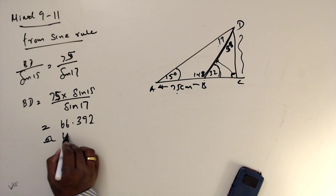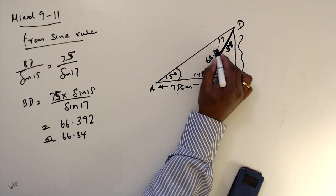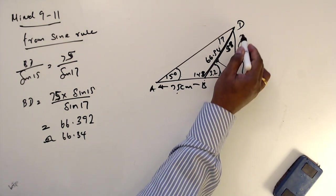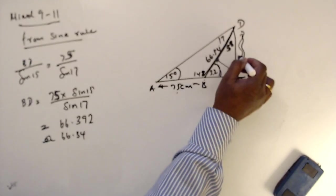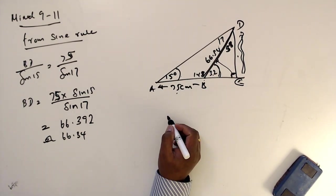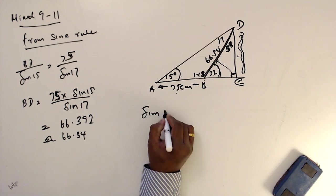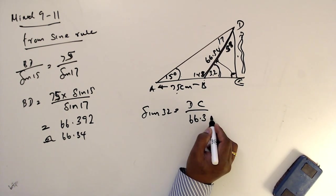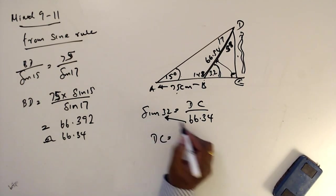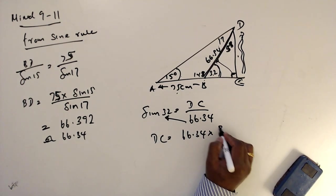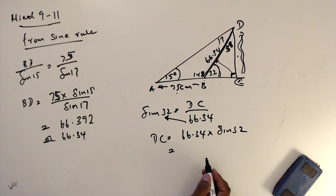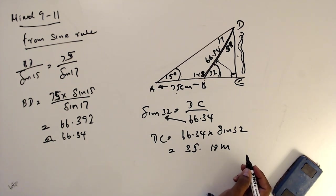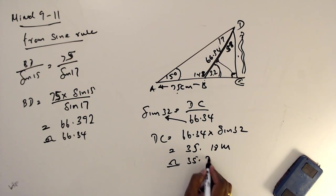So BD is approximately 66.34. Now in triangle BDC, DC is the opposite side and BD is the hypotenuse, so the ratio is sine. Sine 32 equals DC divided by 66.34, so DC equals 66.34 times sine 32. The answer is approximately 35.2 meters.